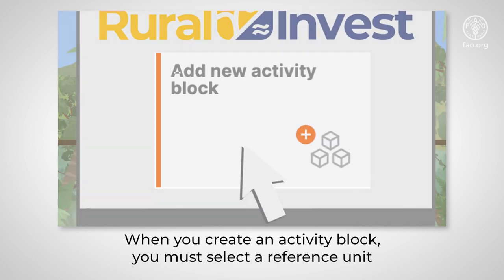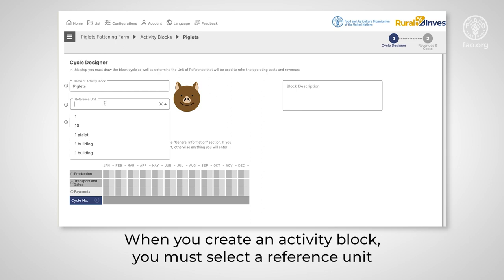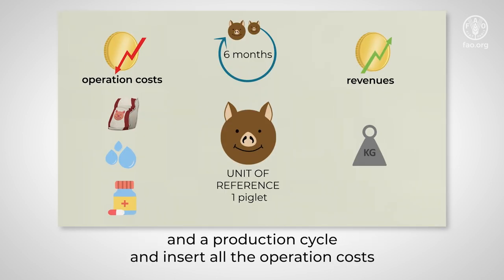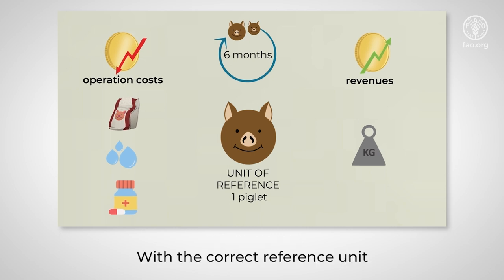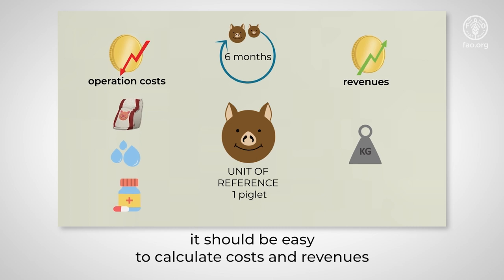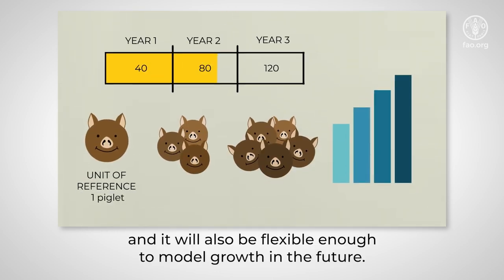When you create an activity block, you must select a reference unit and a production cycle, and insert all the operation costs and revenues according to these units. With the correct reference unit, it should be easy to calculate costs and revenues, and it will also be flexible enough to model growth in the future.